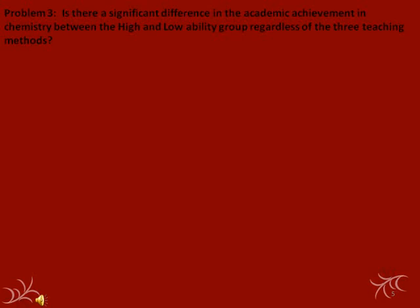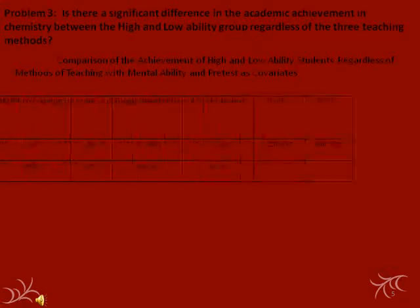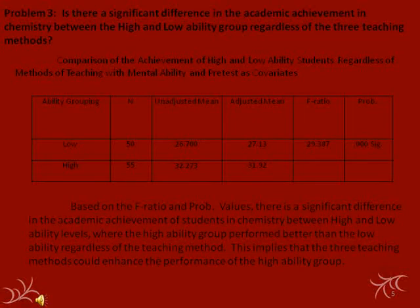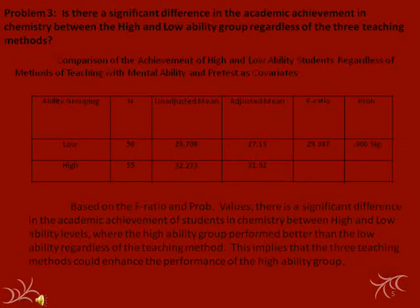Problem 3: Is there a significant difference in the academic achievement in chemistry between high and low ability groups regardless of the three teaching methods? Based on the table on the comparison of the achievement of high and low ability students, with mental ability and pre-test as covariates, there is a significant difference where the high ability groups performed better than the low ability regardless of the teaching method. This implies that the three teaching methods could enhance the performance of the high ability group.